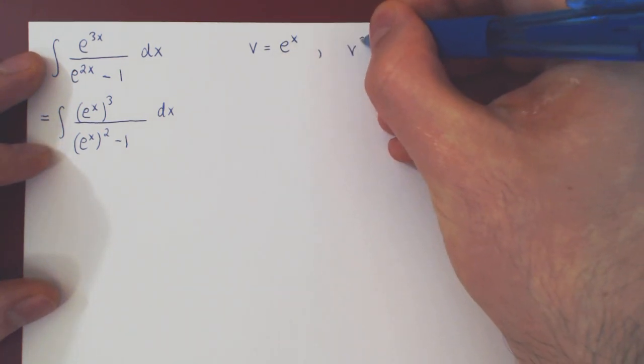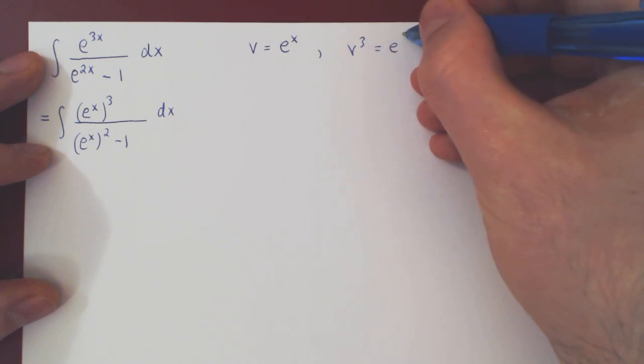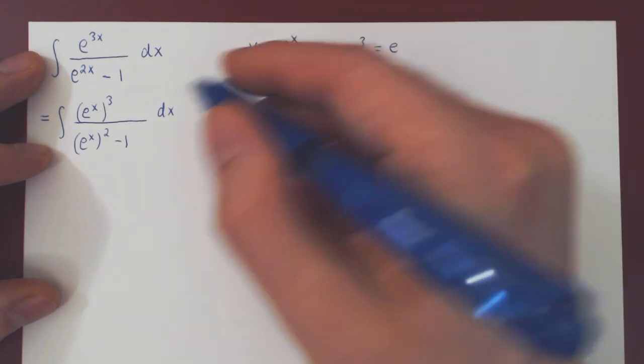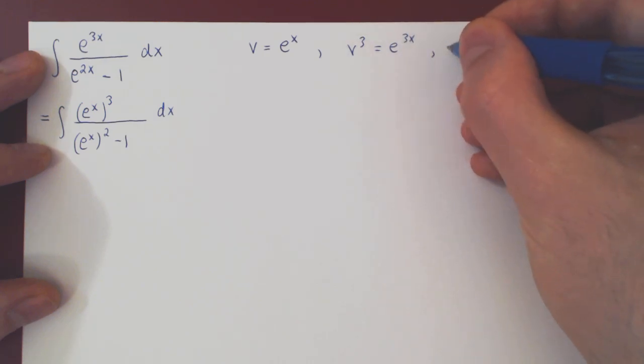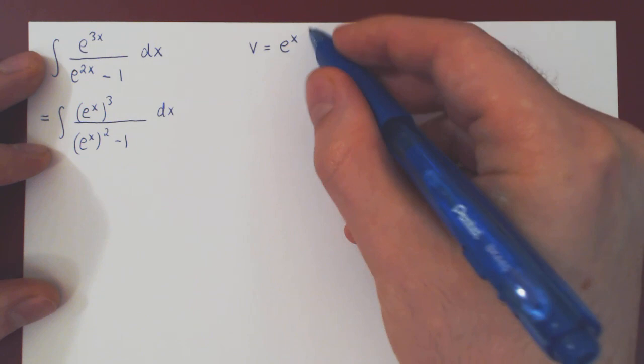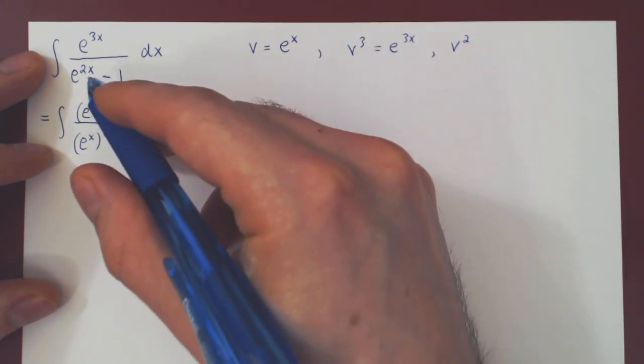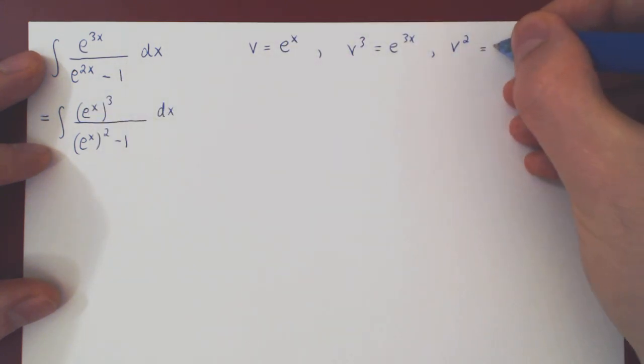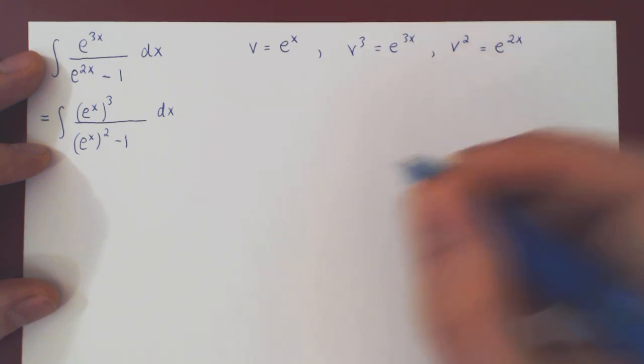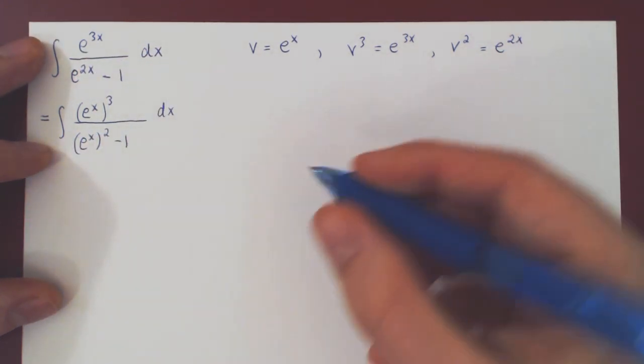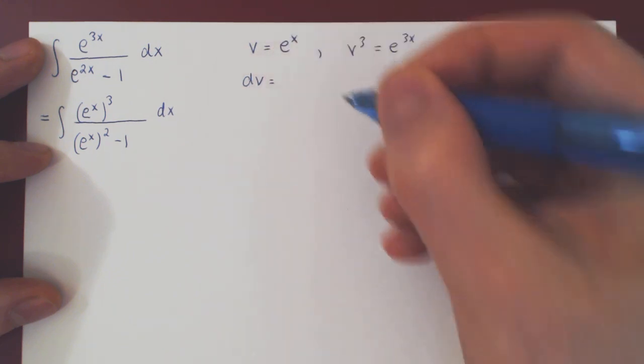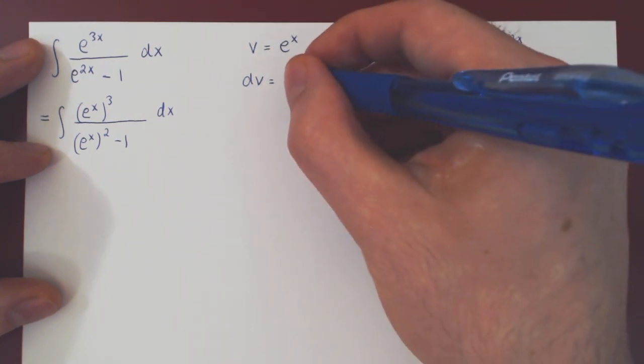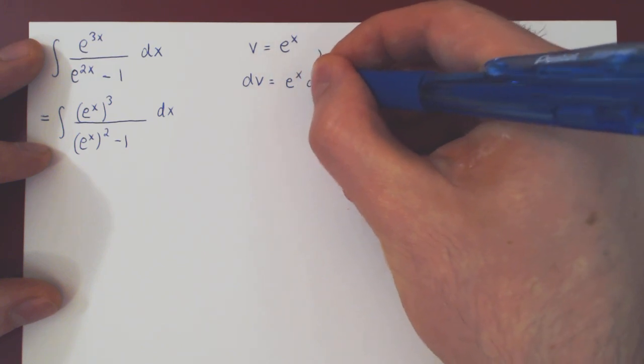We can let v be e to the x. And this is now our rationalizing substitution. So if you cube v, of course you get e to the x all cubed, which is of course e to the 3x. And if you square v, you get e to the x all squared, which of course is e to the 2x. All we're missing now is our differential. So the differential of v is, well the derivative here will be e to the x, therefore e to the x times dx.